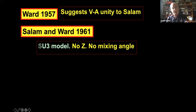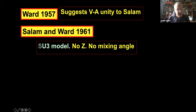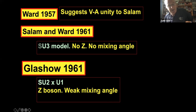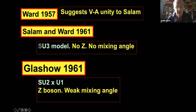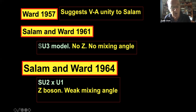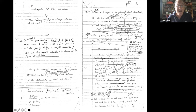By 1961 Ward and Salam had produced their model: a W-plus, W-minus, and photon — no mixing angles, in modern language a U(3) model. Unknown to them, Glashow across the Atlantic had already written down SU(2) × U(1) with a Z and a weak mixing angle. Three years later, in 1964, Ward and Salam had produced pretty much the same thing — an SU(2) × U(1) model with a Z boson and a weak mixing angle — three years after Glashow.